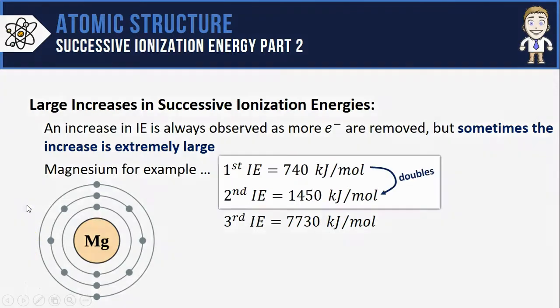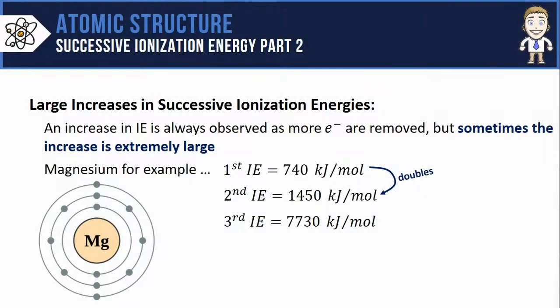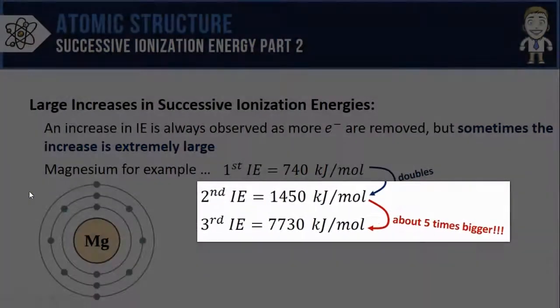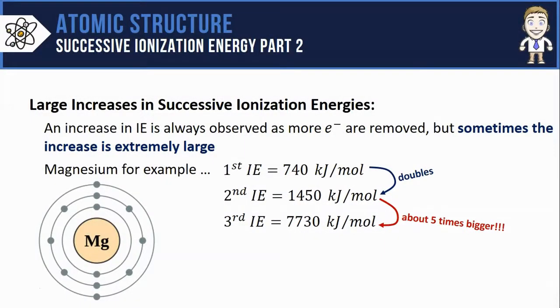The second electron only takes about twice as much energy as it did to remove the first, so it increases but not by that much. The third electron, however, takes about five times as much energy as the second, and that is an extremely large increase. We're simply asking the question: why does that large increase exist? To understand...